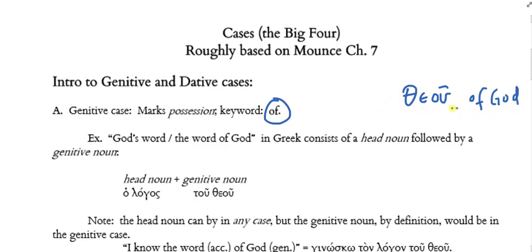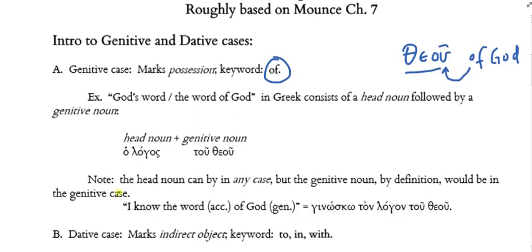There is no separate Greek word for 'of' — it is the case ending itself that represents the 'of' notion, and it's the 'thea' part that represents 'God.' Now when we want to say something like 'God's word' or 'the word of God,' it's going to consist of two parts: the head noun, followed by a genitive noun. Most of the time the genitive noun follows, though it can precede. So take a look at this expression: 'ho logos tou theou.'